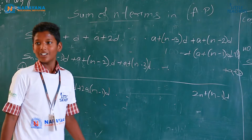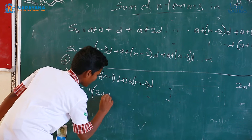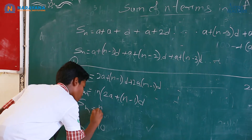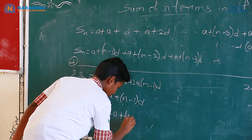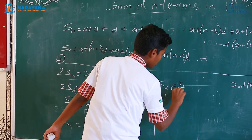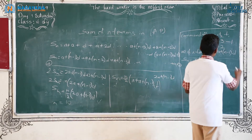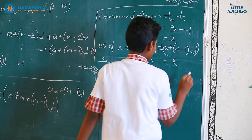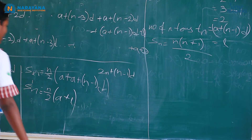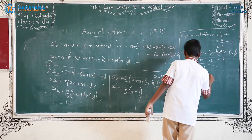As I said before, the sum of many equal additions is nothing but multiplication. So 2Sn equals n into (2a plus n minus 1 into d). Therefore Sn equals n by 2 into (2a plus n minus 1 into d). We can also write this as Sn equals n by 2 into (a plus (a plus n minus 1 into d)), where the last term L equals a plus n minus 1 into d. So Sn equals n by 2 into (a plus L). We got the formula for the sum of first N terms in arithmetic progression.